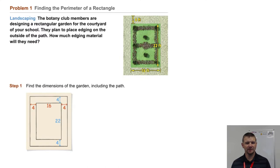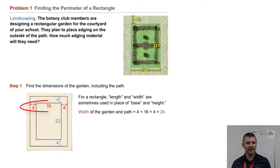Step one, we'll find the dimensions of the garden, including the path. For a rectangle, length and width are sometimes used in place of its base and height. The width of the garden path is 4 plus 16 plus 4, and that's 24. The length of the garden path is 4 plus 22 plus 4, and that's 30.